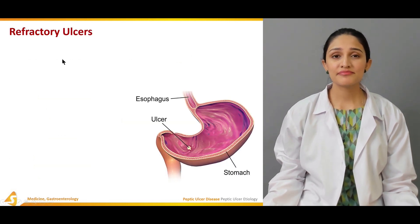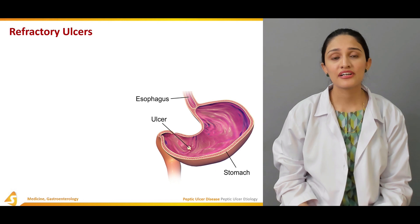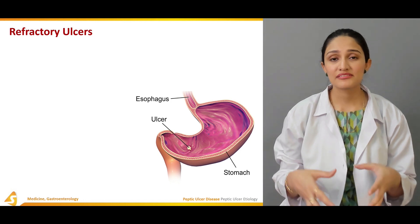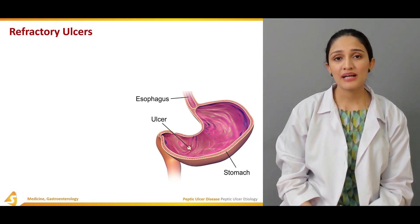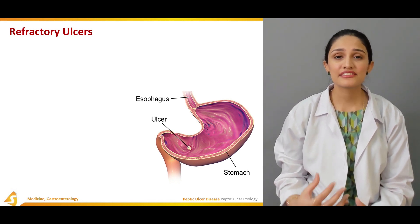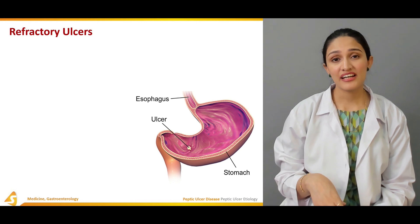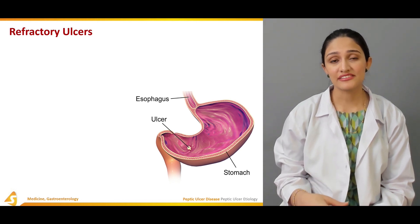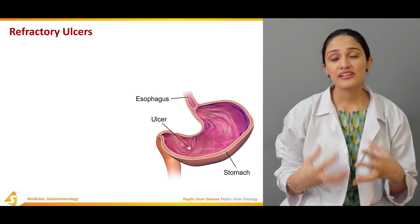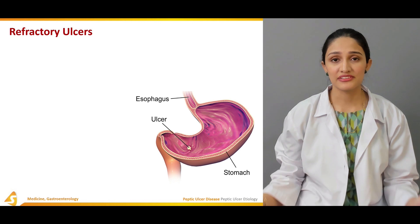A different type is called refractory ulcer. What happens is that a patient has a gastric or duodenal ulcer, and after treatment — such as antisecretory therapy — the ulcers still persist despite having this treatment. These ulcers are known as refractory ulcers, meaning they are not being resolved with antisecretory therapy or any other treatments of peptic ulcer disease.